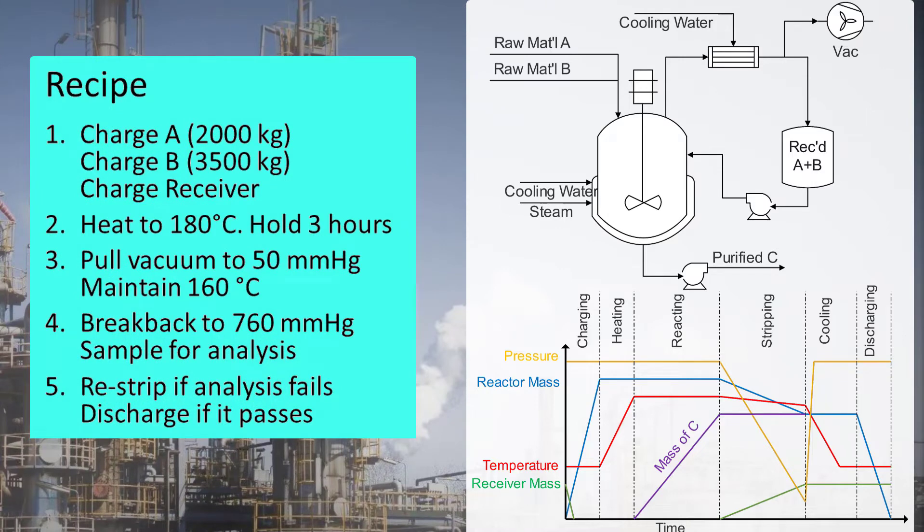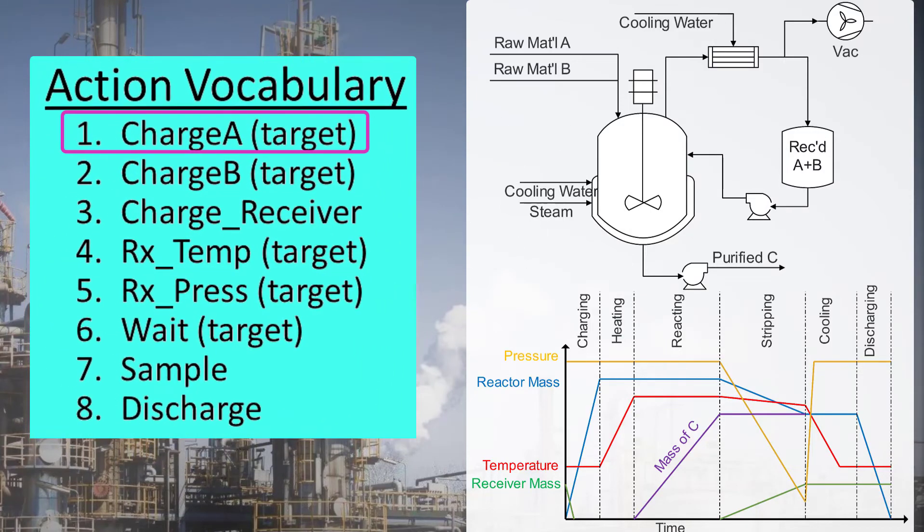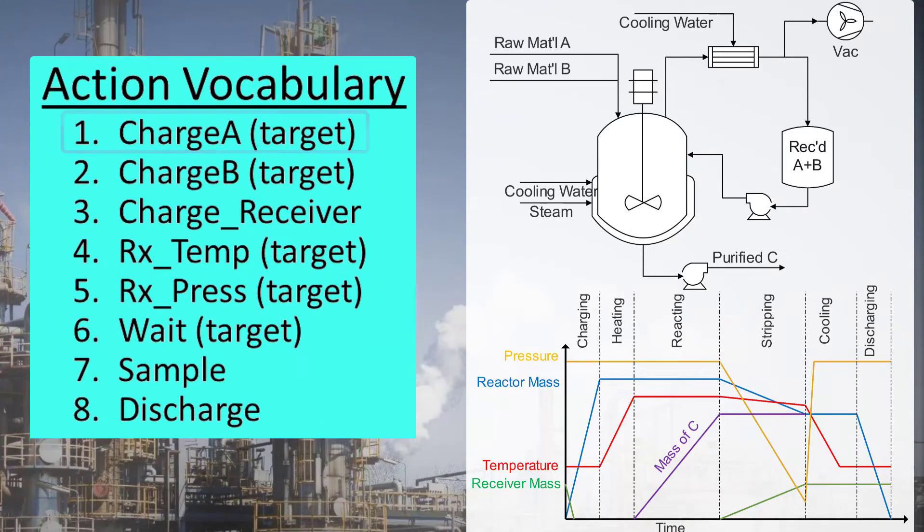We're going to write a sequential function chart for this recipe, but for actions, I'm going to limit us to the elements of this list. Charge A, which charges A to the reactor. Charge B. Charge receiver, which empties the receiver into the reactor. Reactor temperature, which controls the temperature. Reactor pressure, same. Weight, sample, and discharge. In each case, the target parameter is the quantity we want achieved. Kilograms for the charge steps. Degrees for temperature. Millimeters of mercury for pressure. And minutes for weight.